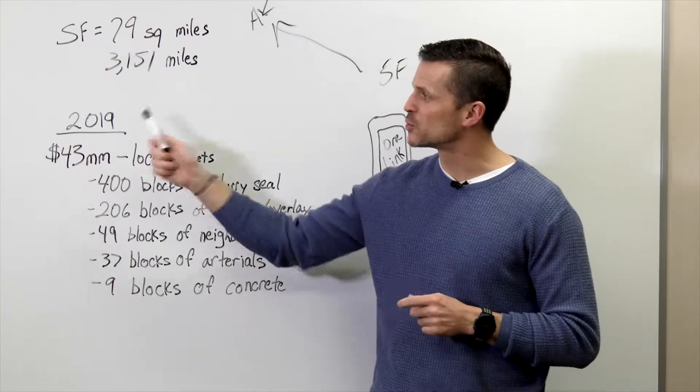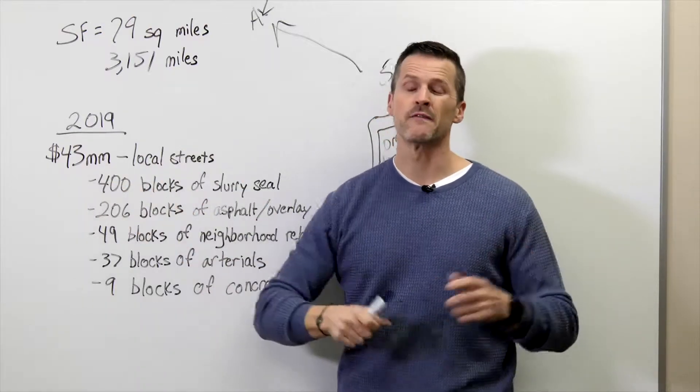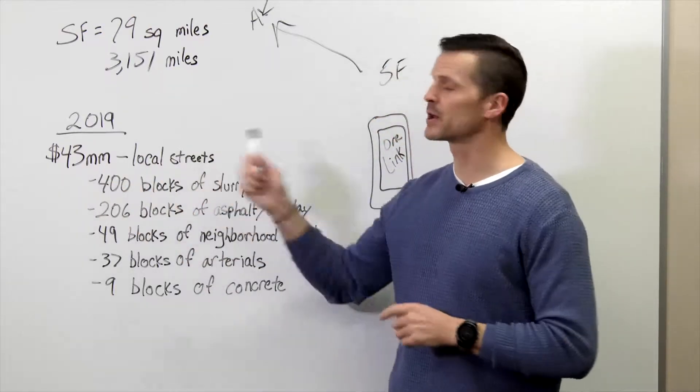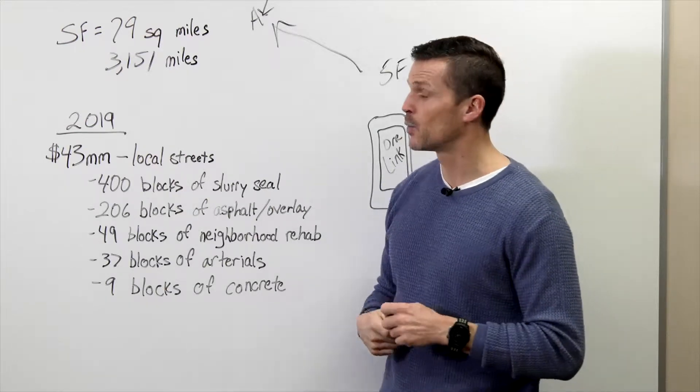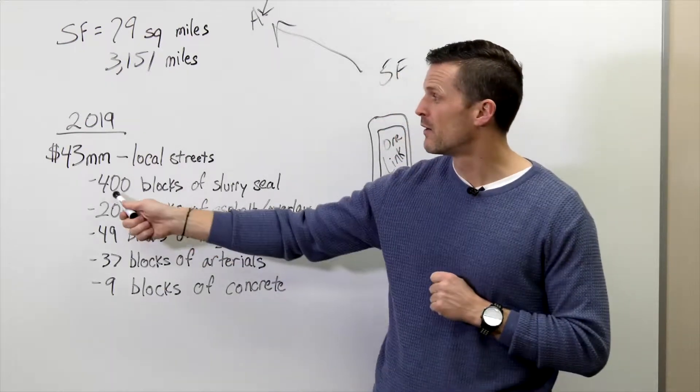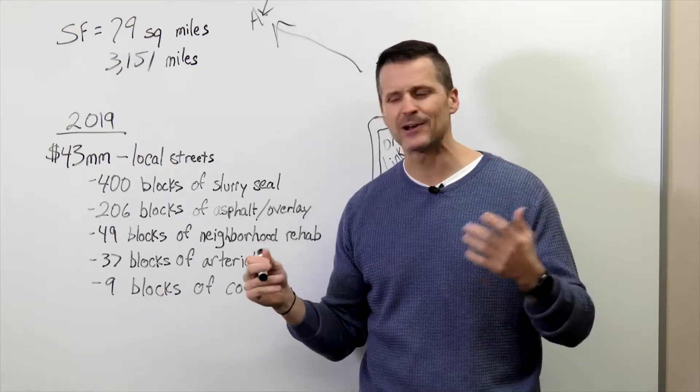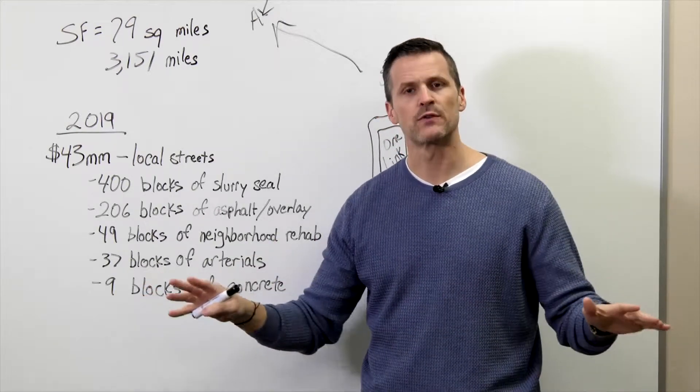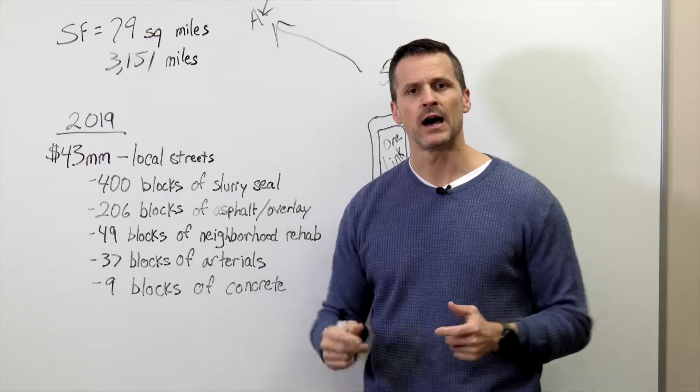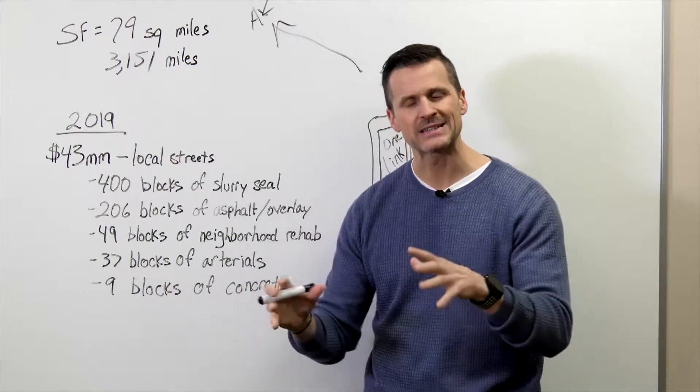Based on that, in 2019 we're spending a little north of $43 million simply on local street work. What that's going to look like is over 400 blocks of slurry seal work. Slurry seal is overlay that goes over roads to preserve their life and to keep the concrete and the blacktop together.